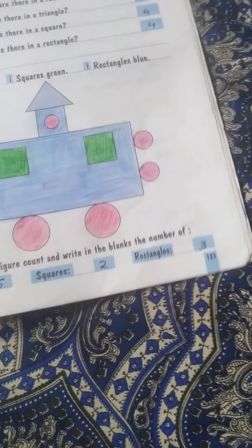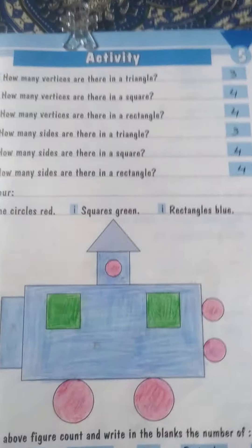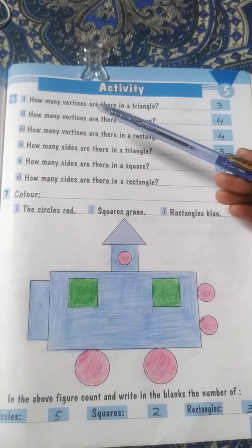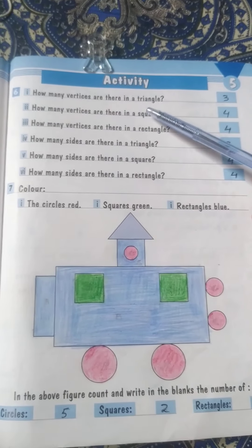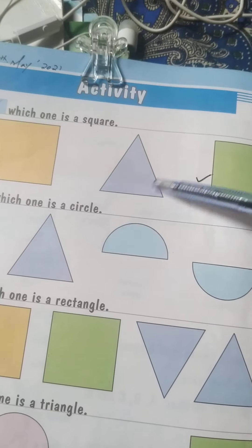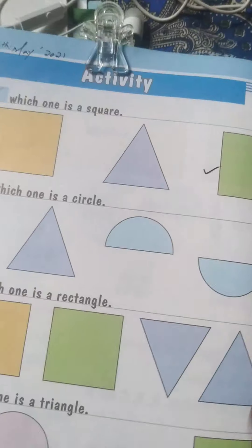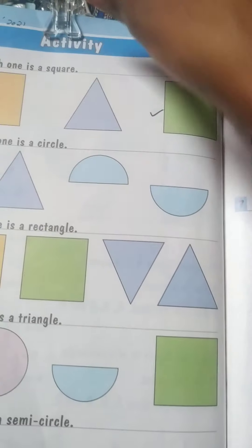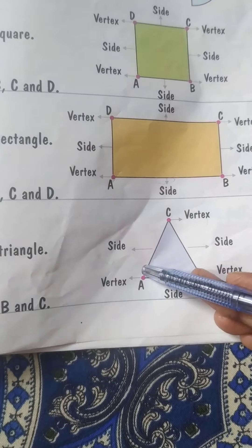Now come to page number 121. There is an activity. How many vertices are there in a triangle? I have told you that a triangle's corners are its vertices. These are the corners of the triangle, as mentioned in the previous class.